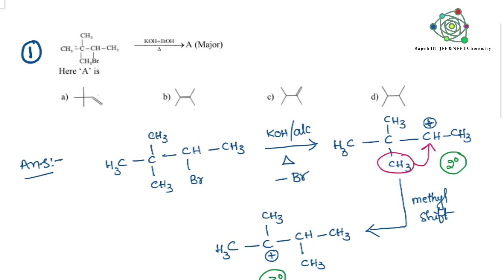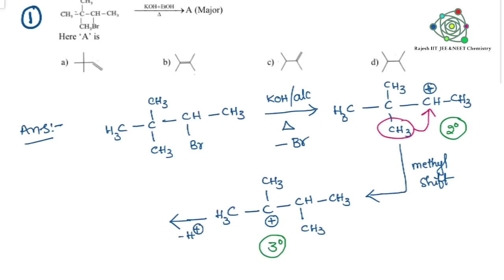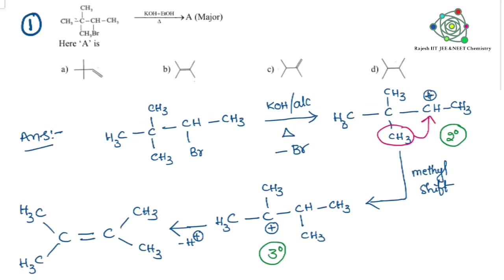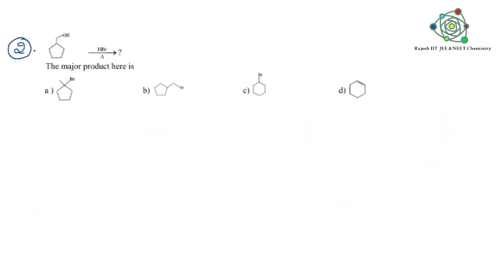After that, Br⁻ comes out. This is an elimination reaction, so one acidic hydrogen (H⁺) is also eliminated. Overall, we remove the hydrogen from this side, and therefore we get 1,3-butadiene. With the substitutions present, we get this type of product. The second option is the answer.